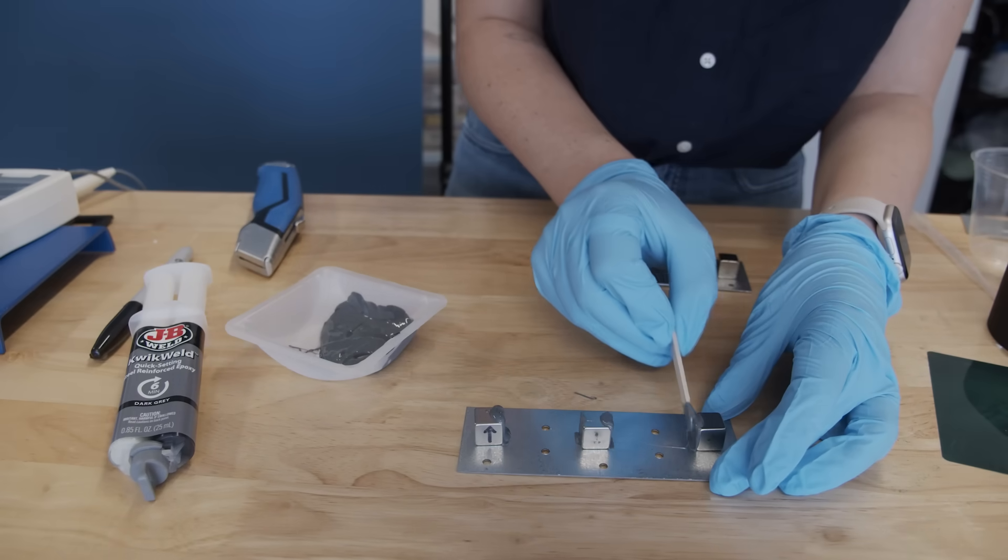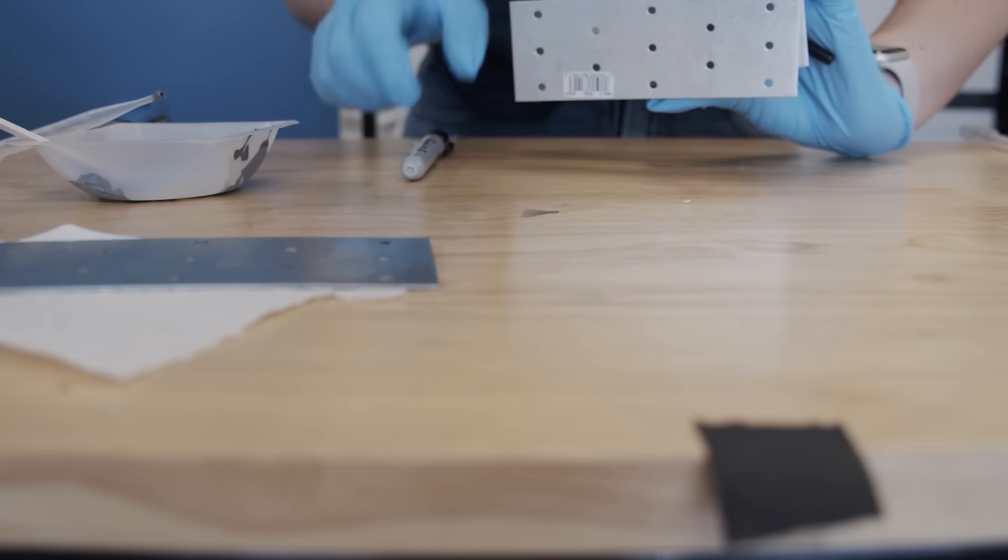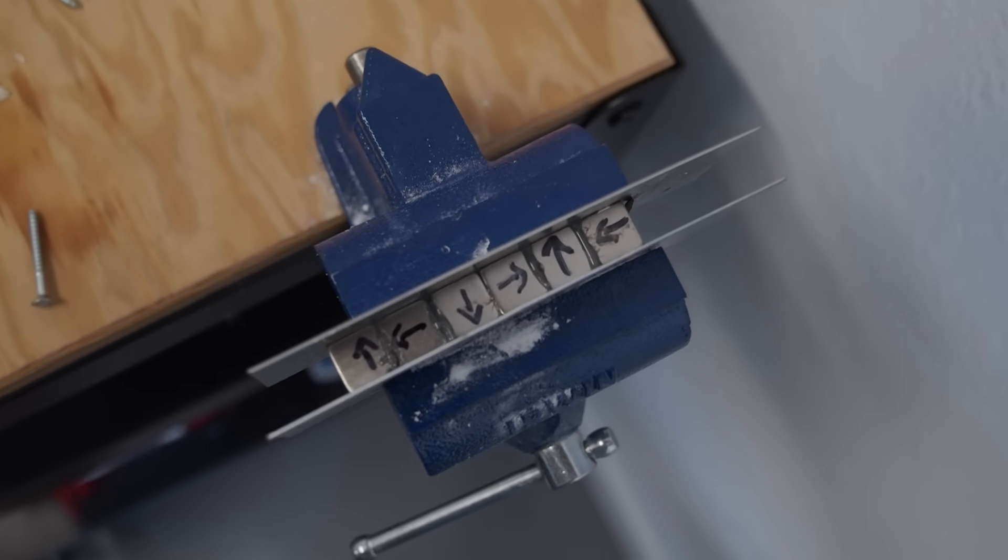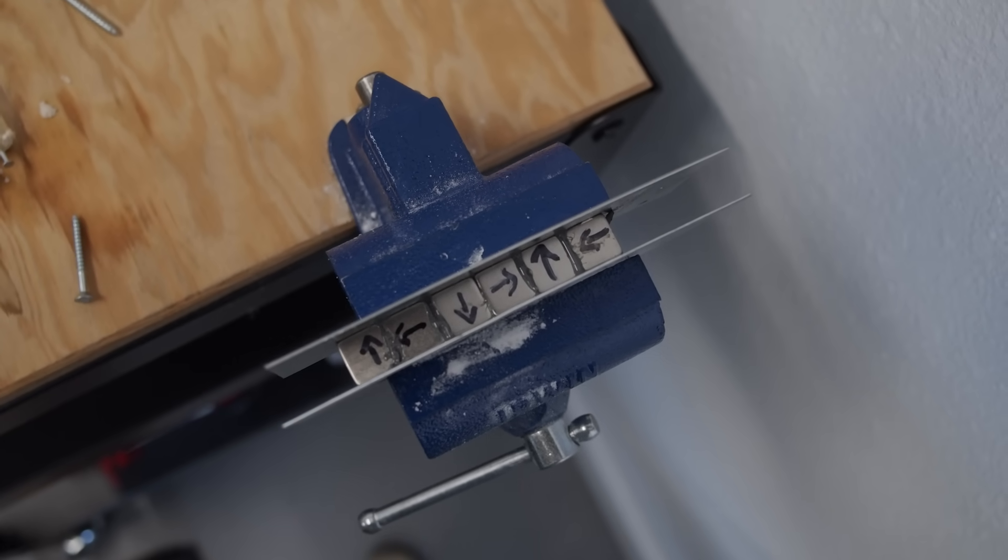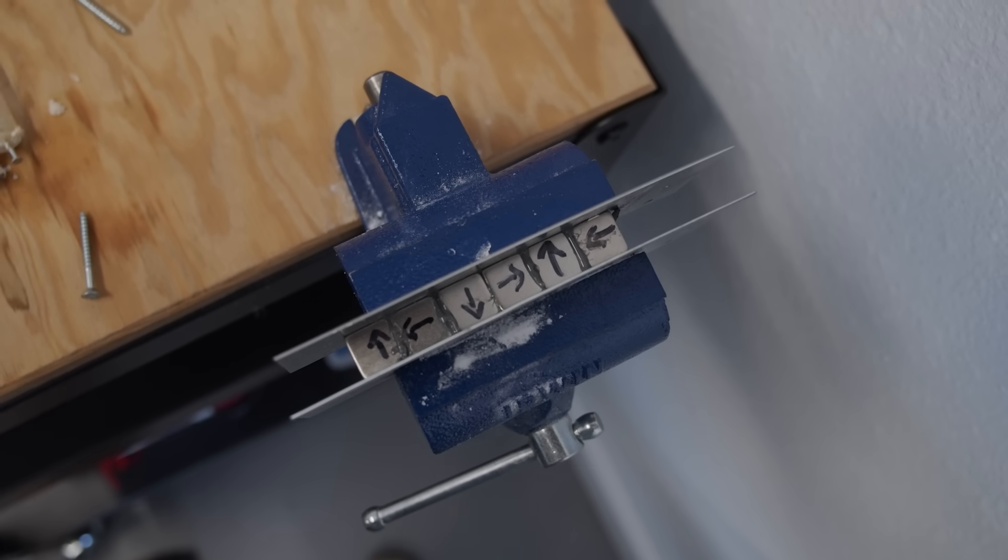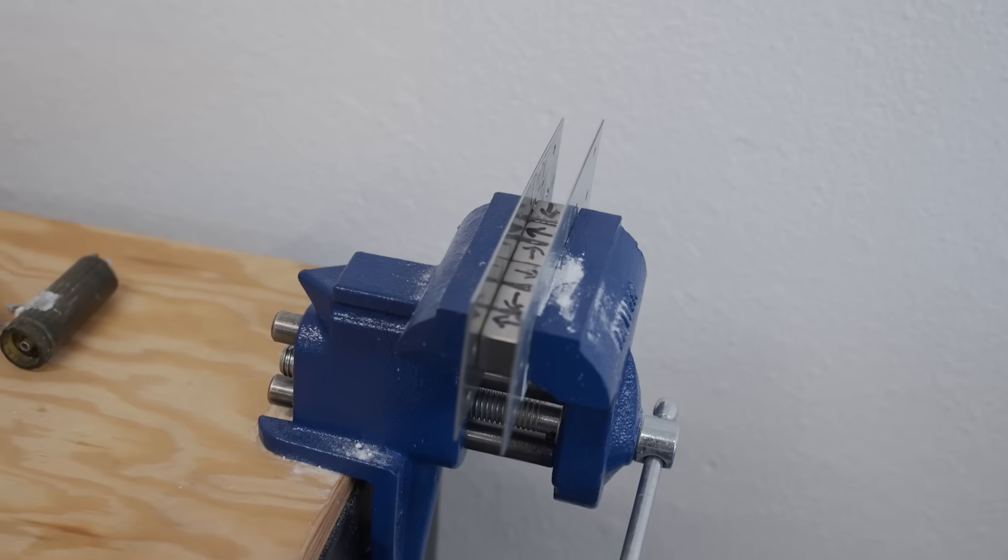The problem with constructing a DIY Hallbach array is that the magnets want to fly out of it. I ended up having to put my Hallbach array in the vice as it dries because the two plates were starting to push away from each other. But then I remembered that my vice is metal. So we'll see if I can get this out of here later. But it's definitely more stuck to one side of the vice than the other. So it's working.